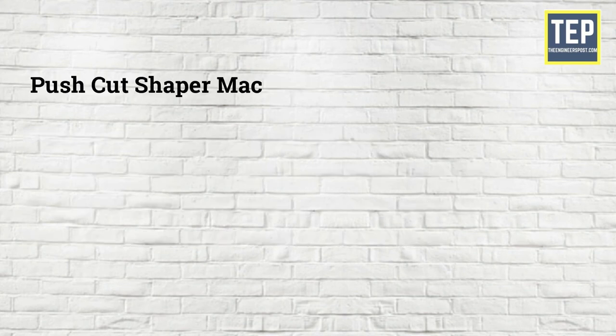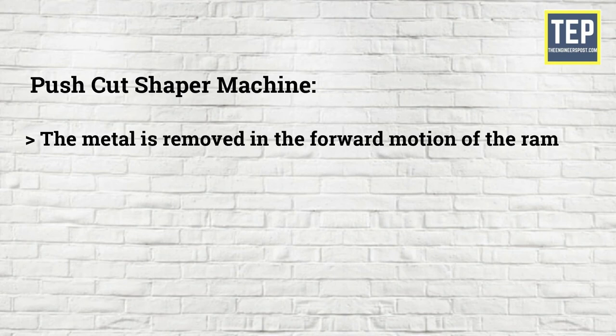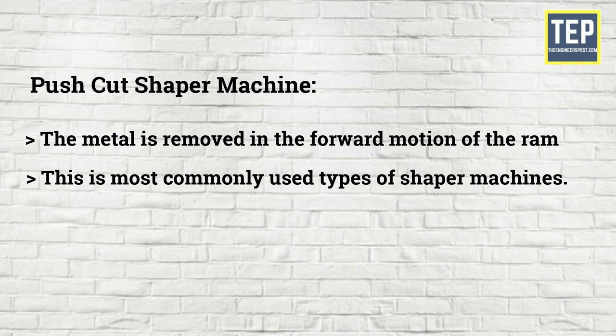Push Cut Shaper Machine: In these types of Shaper Machines the metal is removed in the forward motion of the RAM. This is most commonly used types of Shaper Machines.